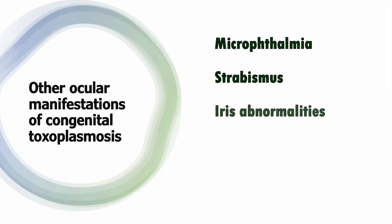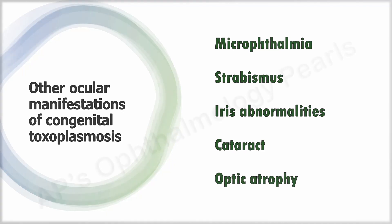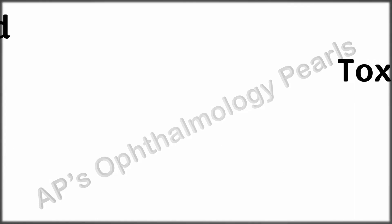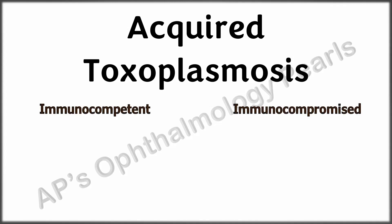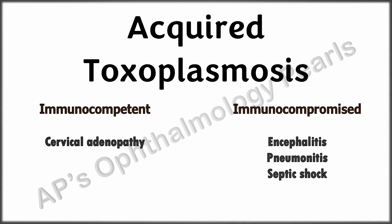Other ocular manifestations may also occur. None of the systemic features of congenital toxoplasmosis are specific and can mimic infection with cytomegalovirus, herpes simplex virus, rubella, and syphilis. Toxoplasmosis in children and adults may be due to reactivation of congenital infection or newly acquired infection, commonly manifesting in the second through fourth decades. Immunocompetent persons may have asymptomatic cervical adenopathy, while encephalitis, pneumonitis, and septic shock can occur in immunocompromised persons.